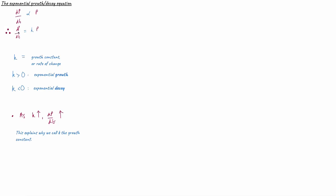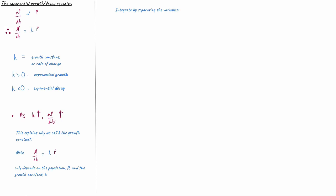The rate of change of population over time only depends on two things: k, the growth constant, and P, the size of the population at that particular moment in time. Let's integrate this differential equation by doing something called separating the variables.